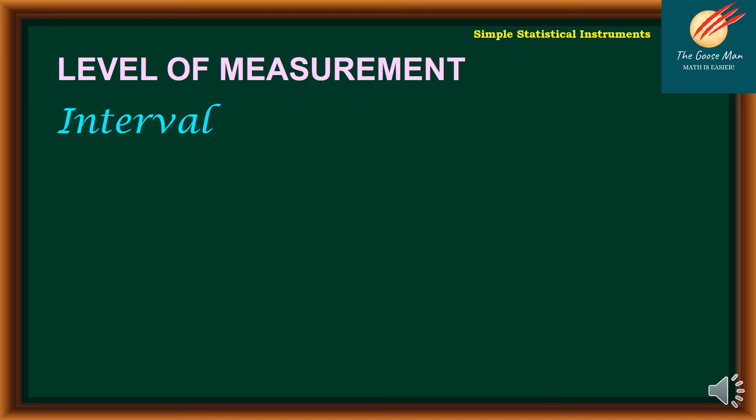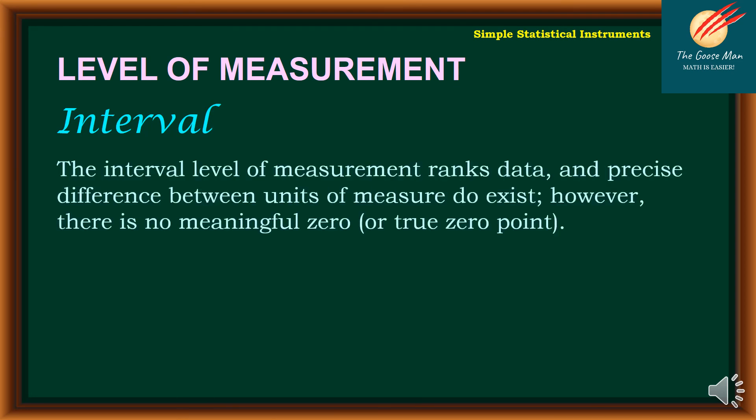Let's move on to the third level of measurement, which is interval. The interval level of measurements ranks data and precise difference between units of measures do exist. However, there is no meaningful zero or true zero point. Example is our temperature. We can read the zero degrees centigrade and 100 degrees centigrade. If we have zero degrees centigrade, that means that we don't have temperature. Right? Next one is IQ score. Sometimes if your IQ is zero, it doesn't mean that you do not have intelligence. Again, there is no meaningful zero in the level of measurement or interval.